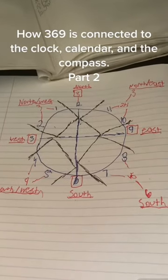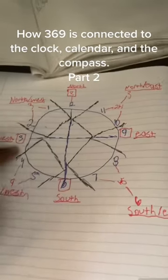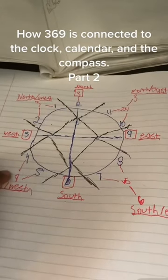This is a continuation of how 369 is connected to the calendar and the compass. As you can see all around, all of the numbers are simplified to the 3, 6, and the 9.